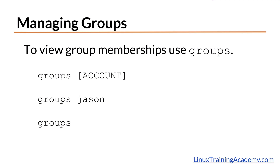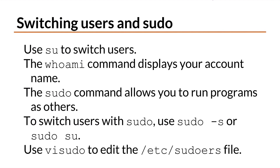If you execute the groups command without any arguments, it displays the groups that the current user is in. If you want to switch to another account, use the su command, which stands for switch user. To verify what account you're currently using, simply run the whoami command and it will return the account name. The sudo command is used to allow one user to run commands as another user — most commonly to allow a normal user to execute a program as the superuser. To start a shell as another user, run sudo -s or sudo su.